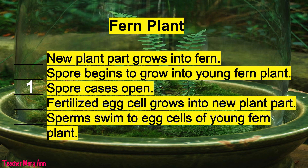For fern reproduction: number one, spore cases open; number two, spore begins to grow into young fern plant; number three, sperm swim to egg cells of young fern plant; number four, fertilized egg cell grows into new plant part; and number five, new plant part grows into fern.